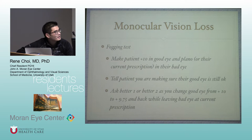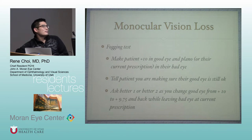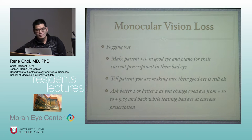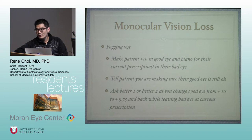The fogging test is one of the confusion or misdirection tests. With the phoropter, put plus-10 diopters in the good eye and plano or their current prescription in the bad eye. Tell the patient you're making sure their good eye is still okay. Then ask 'is one or two better' as you change the good eye from plus-10 to plus-9.75 and back, while leaving the bad eye at current prescription. If their vision gets better and they start reading the 20/40 line, you know they're reading out of the bad eye. Note: this doesn't work on patients who are already plus-10.